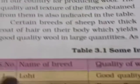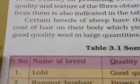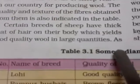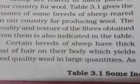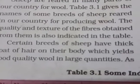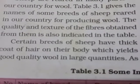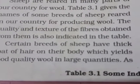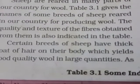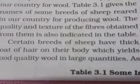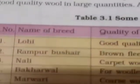Certain breeds of sheep have a thick coat of hair on their body, which yields good quality wool in large quantities. Sheep in hilly regions have more hair because it is cold there — they have long and thick hair to protect from the cold. Sheep in the plains have hair that is not as thick or long, since those areas are already warm. So the quality, texture, and quantity of wool differs by breed and region.